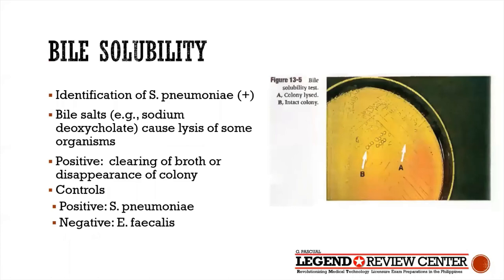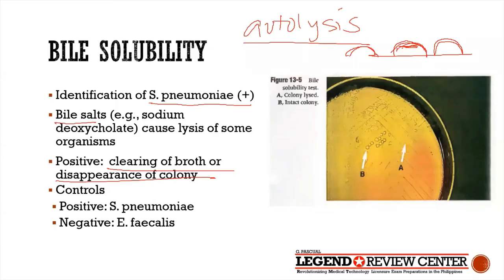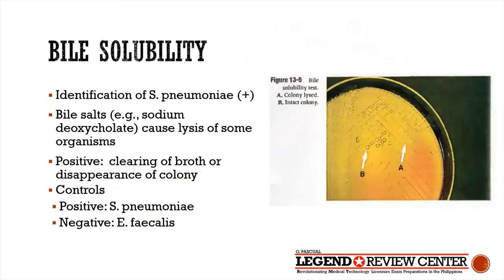Another test is the bile solubility test, which is also positive for Strep pneumoniae. Strep pneumoniae colonies produce autolysis — they tend to digest themselves over time. Adding bile salts enhances this autolysis, so the positive result is clearing of the broth or disappearance of colonies. Positive control: Strep pneumoniae. Remember: both the optochin test and bile solubility test are positive for Strep pneumoniae and negative for viridans strep.